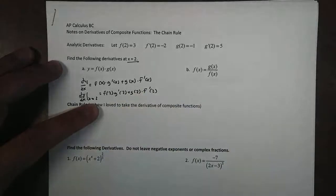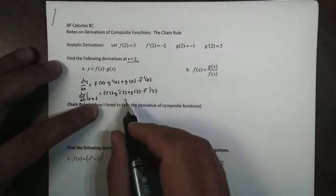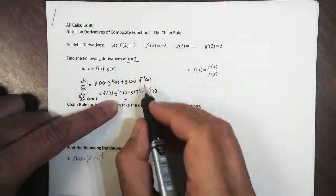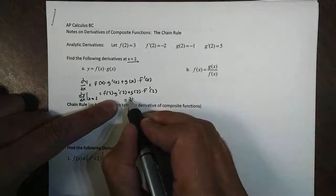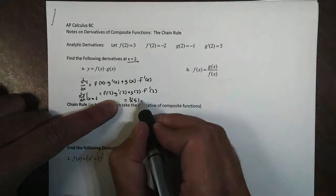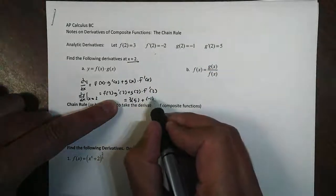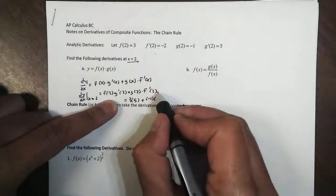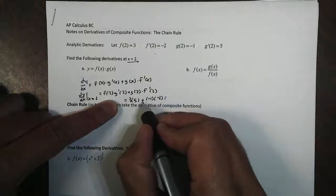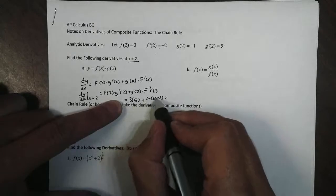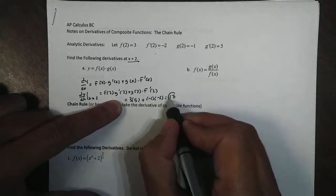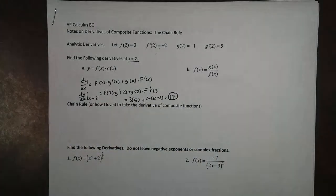Now earlier we got these from a graph, but now we're just going to get them from the values that they tell us. f(2) is 3, g'(2) is 5, plus g(2) is negative 1, and f'(2) is negative 2. And of course if we clean that up we can get 15 plus 2, which is 17. Pretty easy to do.